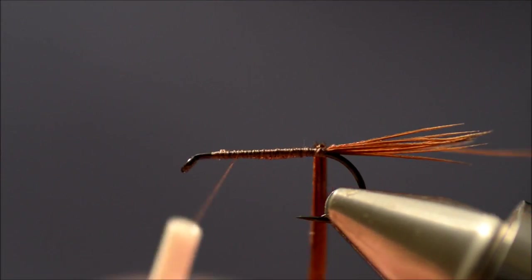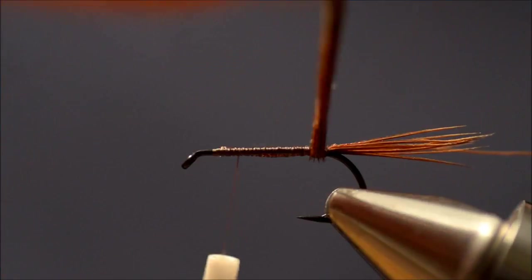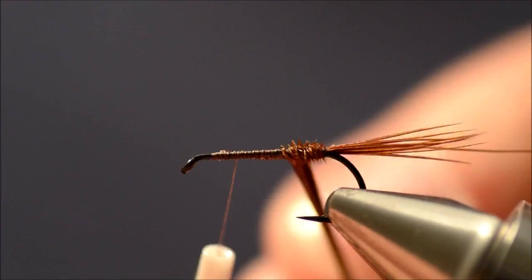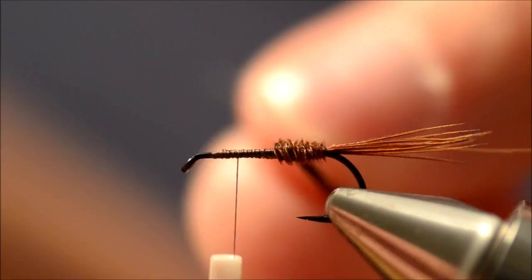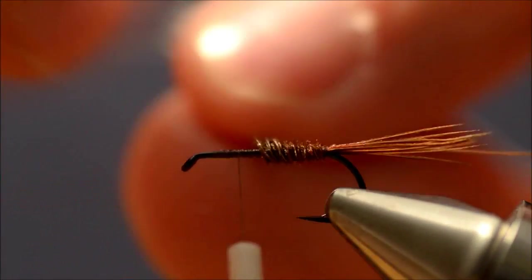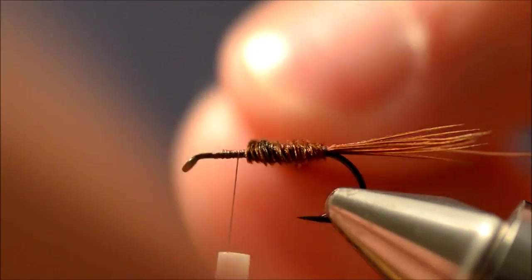Now since the pheasant tail is the weakest fiber, I'm going to wind it towards me, so the wire will properly cross the fibers.